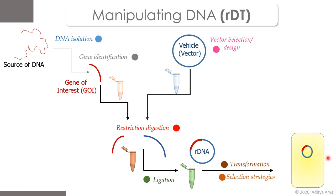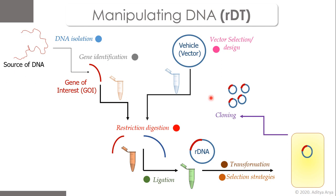There are three important applications of this overall process. The first is cloning — the gene of interest can be cloned because the host cell and vector both divide multiple times, producing a large number of copies of the gene in a small amount of time and at very low cost. The vector used in this case is known as a cloning vector.